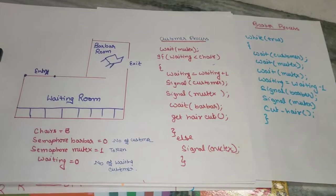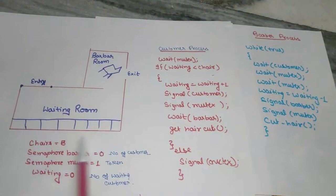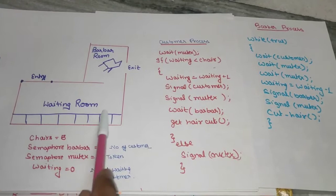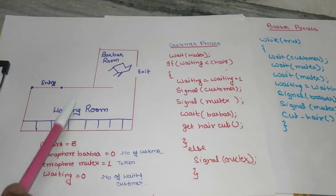There is a barber shop with a single room with one barber chair and n customer chairs. If you look at this layout, there is n customer chairs in the waiting room, with entry and exit portions. If customers arrive, they will wait in the waiting room.